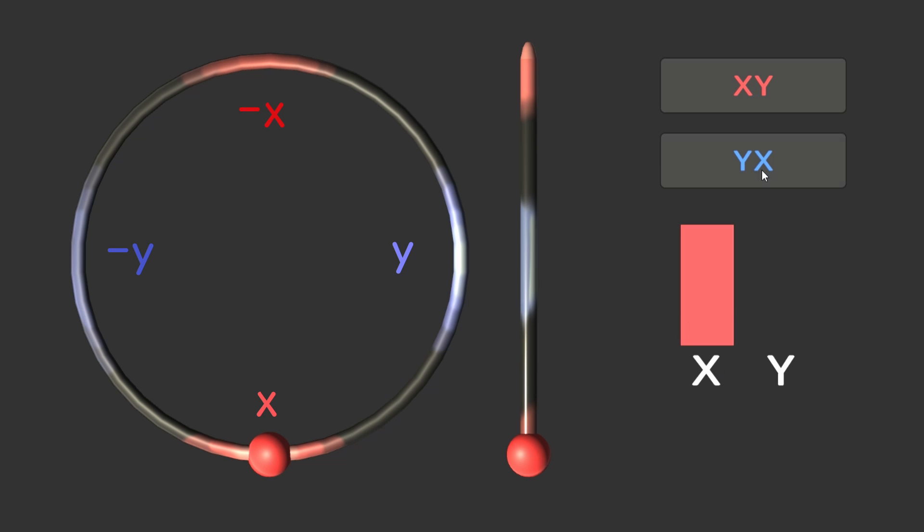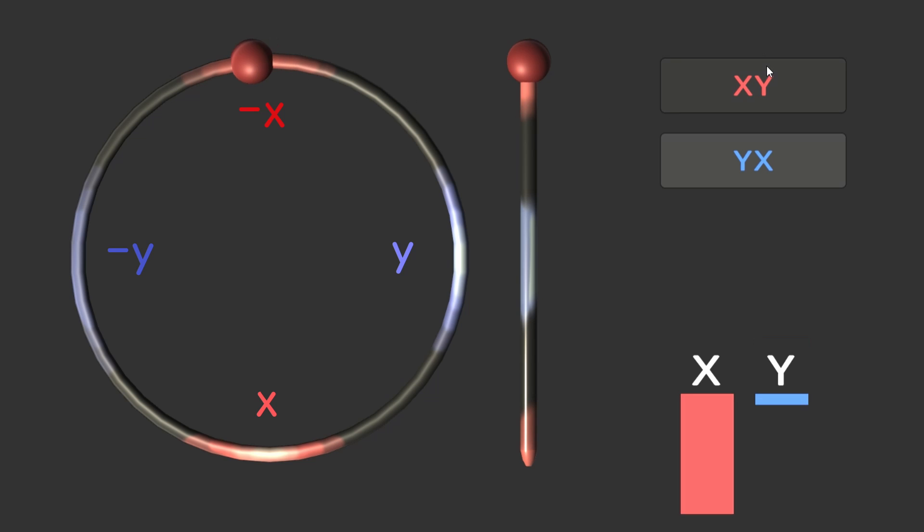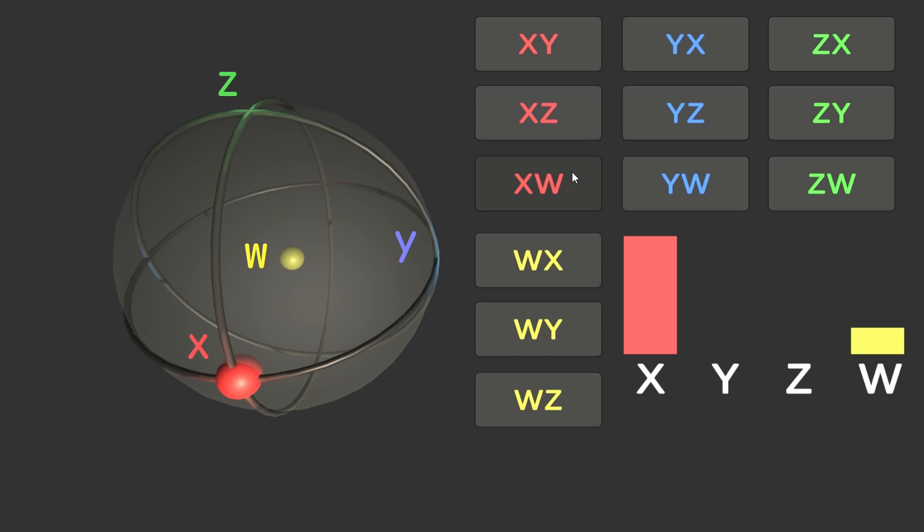Before we continue, I need to introduce some more ideas. First, value exchange. Here you can see the coordinates of the rotating point as colored slopes. When it's above the letter it's positive, and when it's below, it's negative. With plane rotations, we can exchange value between two coordinates. For example, here we exchange value between y and z coordinates. This nicely extends to 4D, where we can distribute the value between four coordinates.